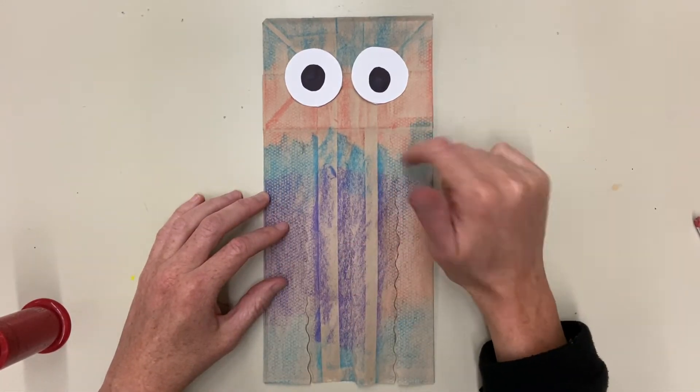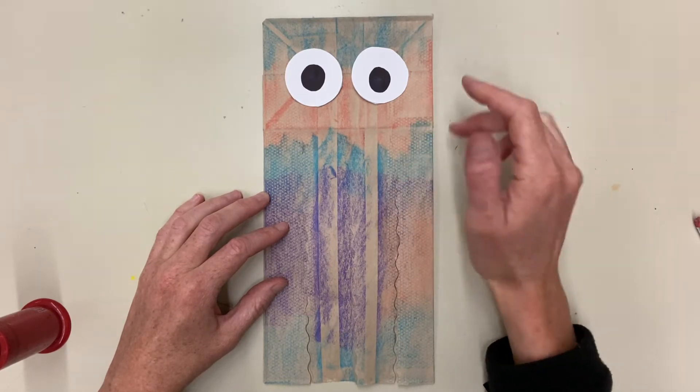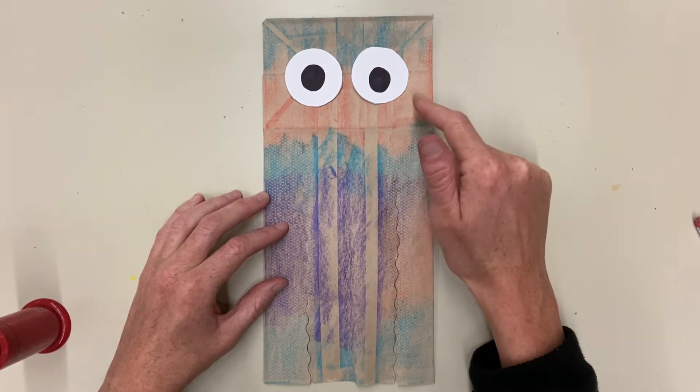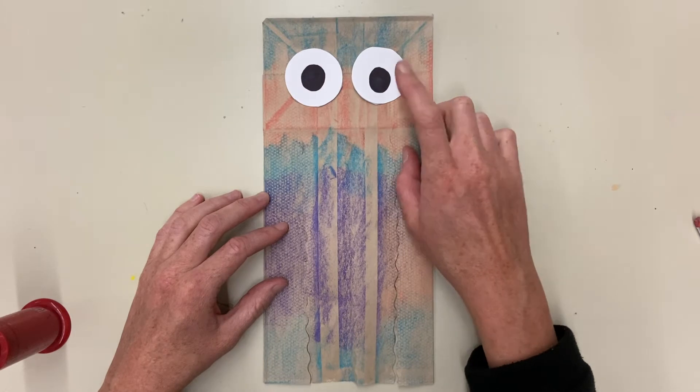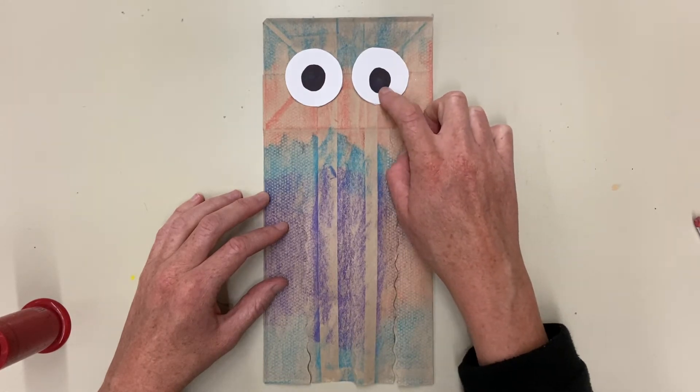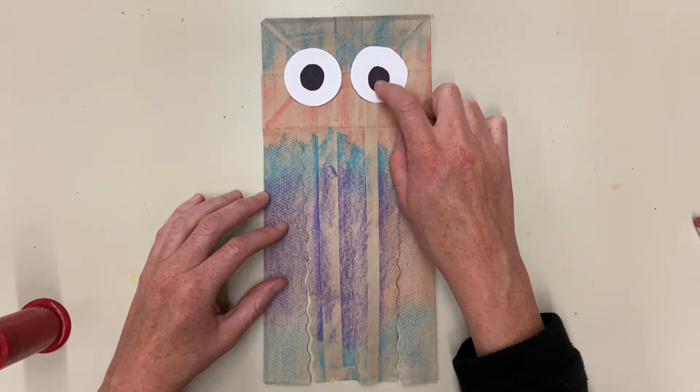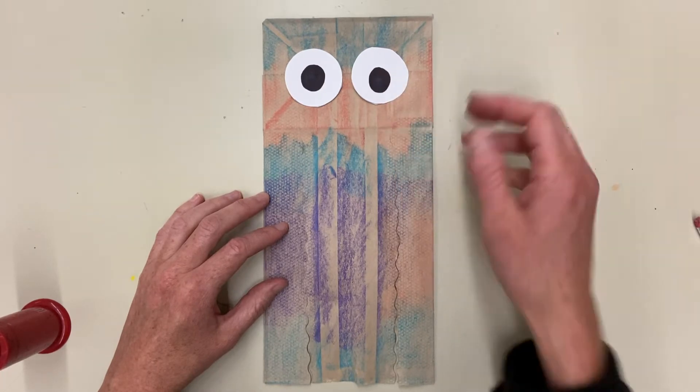Today we are going to make a jellyfish out of a paper lunch bag. All you need is your paper lunch bag, some crayons with the paper torn off the sides, some white paper to make the eyes, and you can use a black crayon or a black Sharpie to do the middle part and a glue stick.